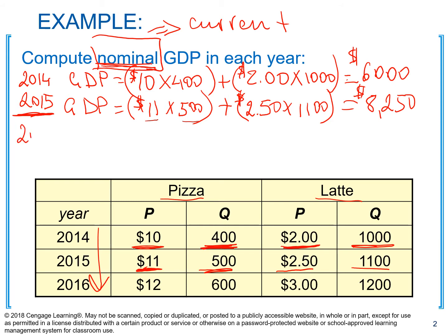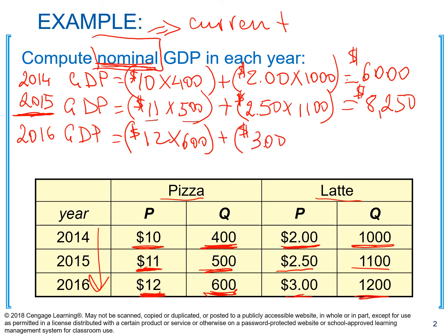For year 2016, looking at higher prices and higher quantities, GDP is going to increase again. Both prices and quantities contributed to that increase. We have $12 for pizza and 600 units, plus $3 for latte and 1,200 units. Our nominal GDP for year 2016 is $10,800.